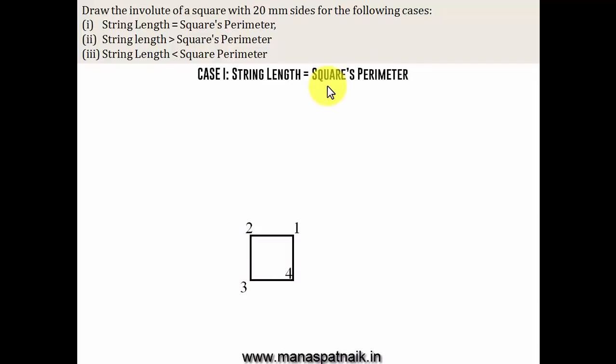So, what we'll do is we'll try to have a string, an inextensible string over here, one end of which is attached at 4, while the other end is at a distance of 80 millimeters from 4. Let's say this end is represented by point P. Now, the next thing to do is we have to wound this string somewhere along this region. So, finally, it would happen is this point P would come into contact with this point 4.